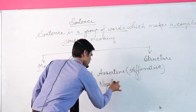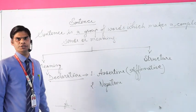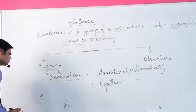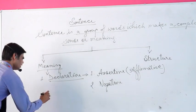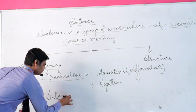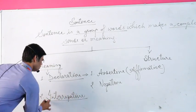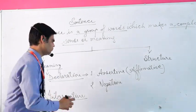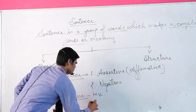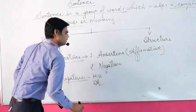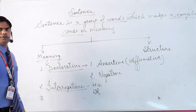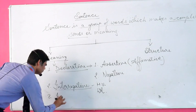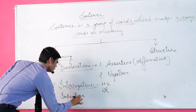It can also be classified in a sub-part as negative — a negative declarative. The second type of meaning-based sentence is interrogative. We can generally frame two types of interrogative sentences: the first started with a helping verb, and the second started with a WH-word or question word.